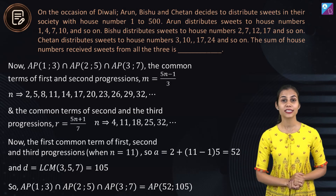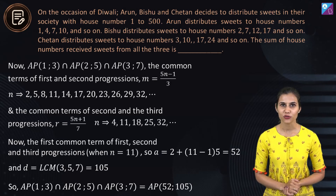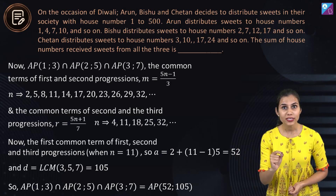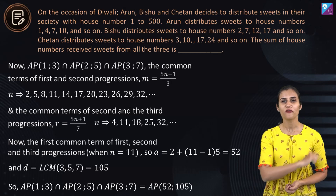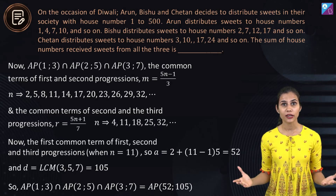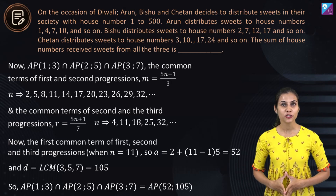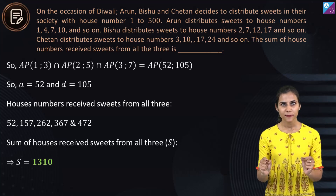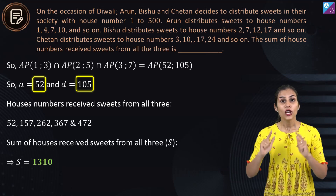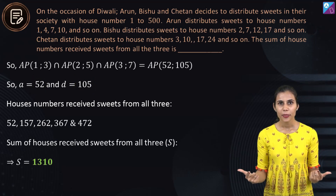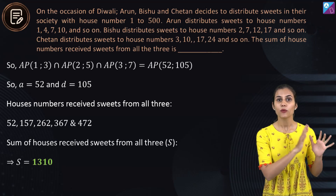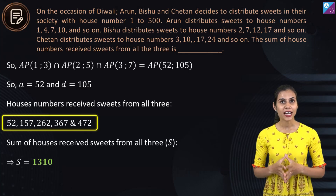So 52 is the first house number common to the APs of Arun, Bishu, and Chetan. The subsequent common house numbers follow an AP pattern with common difference equal to the LCM of the three individual common differences 3, 5, and 7, which is 105. This means the AP with first term 52 and common difference 105 represents all house numbers receiving sweets from all three. Restricted to house numbers 1 to 500, this gives exactly five house numbers.